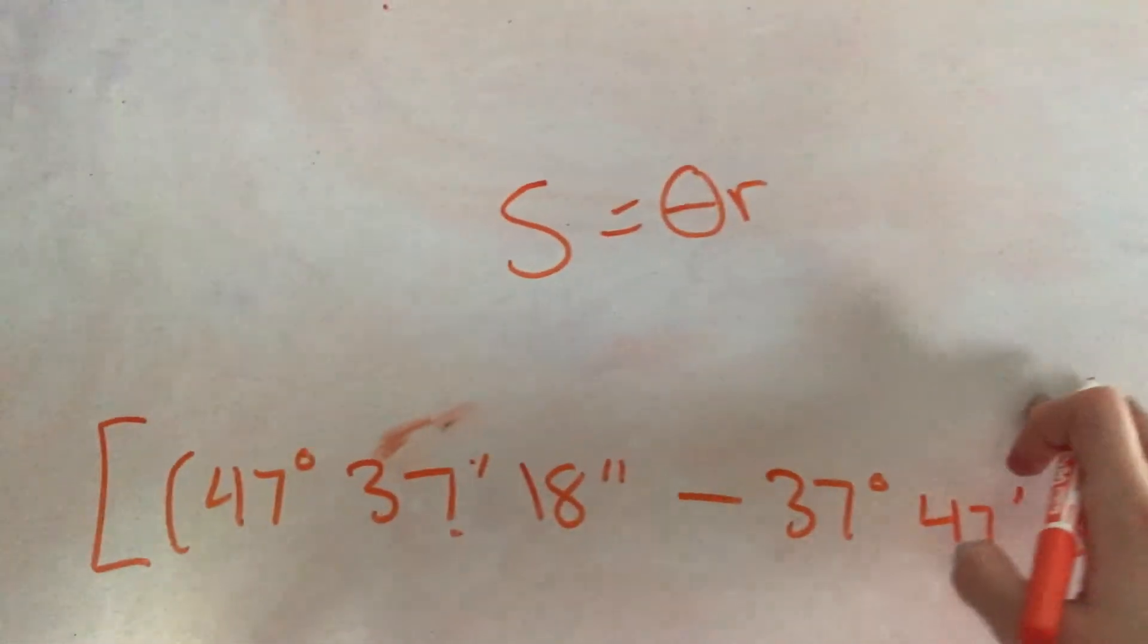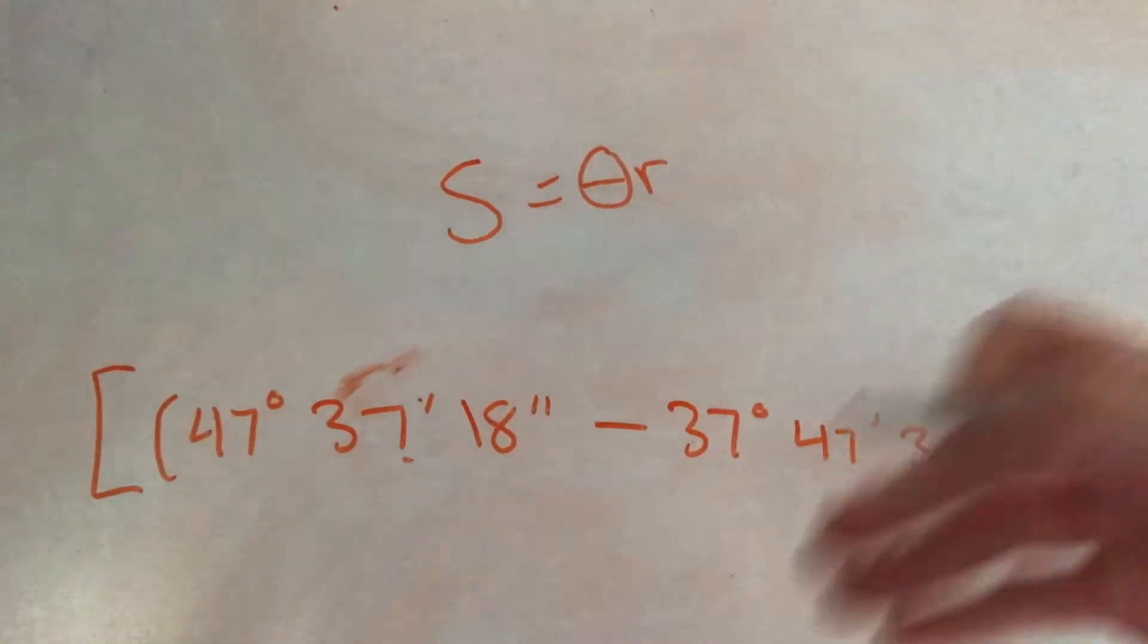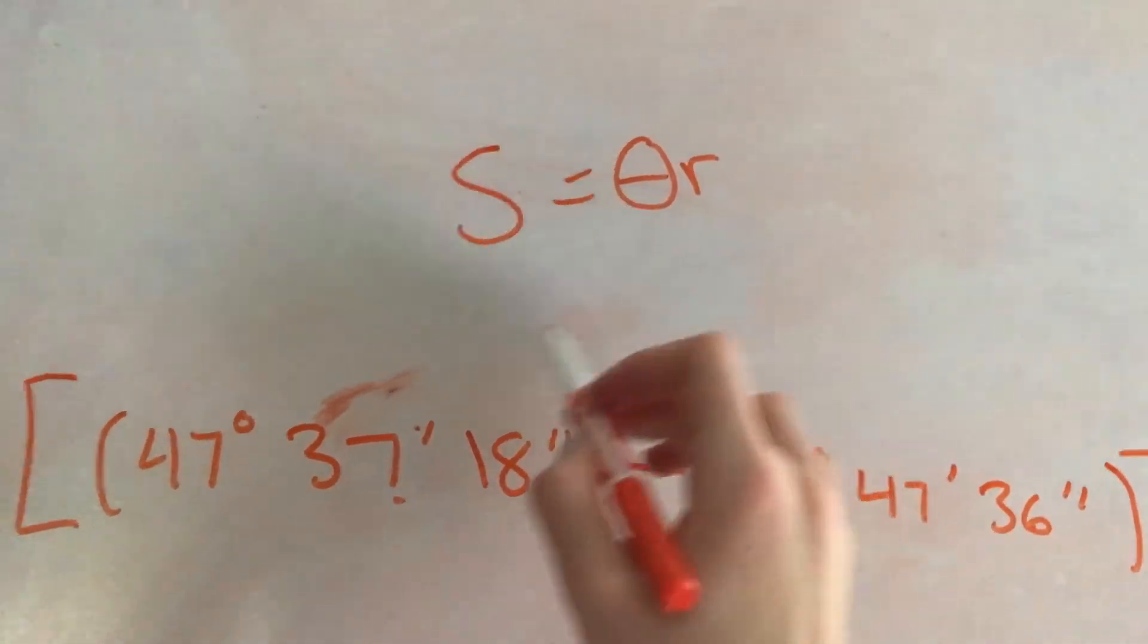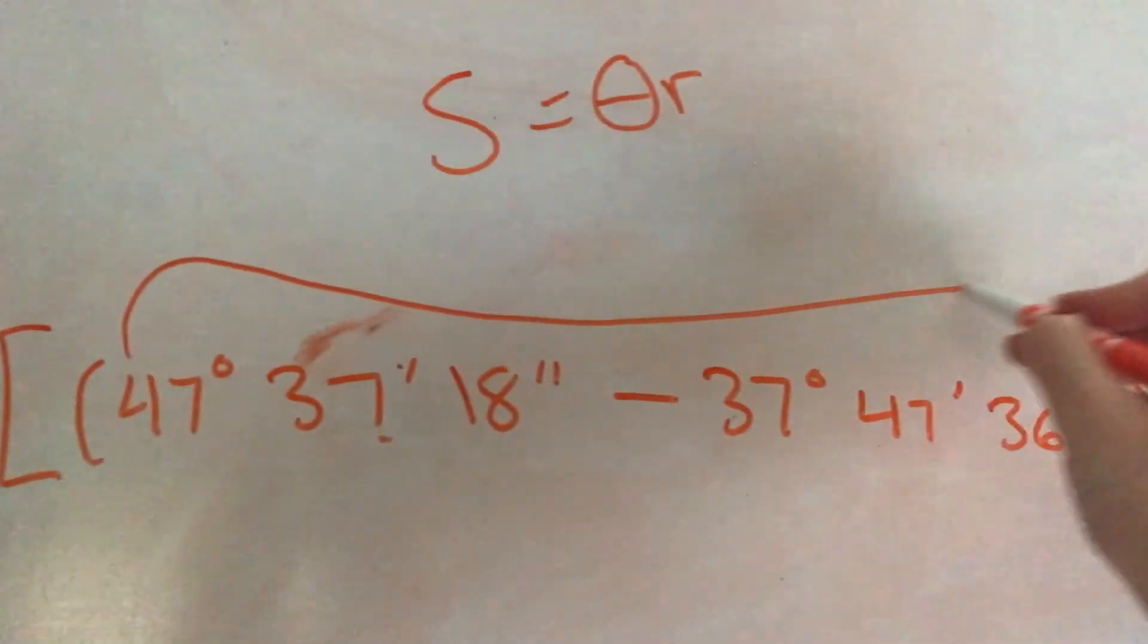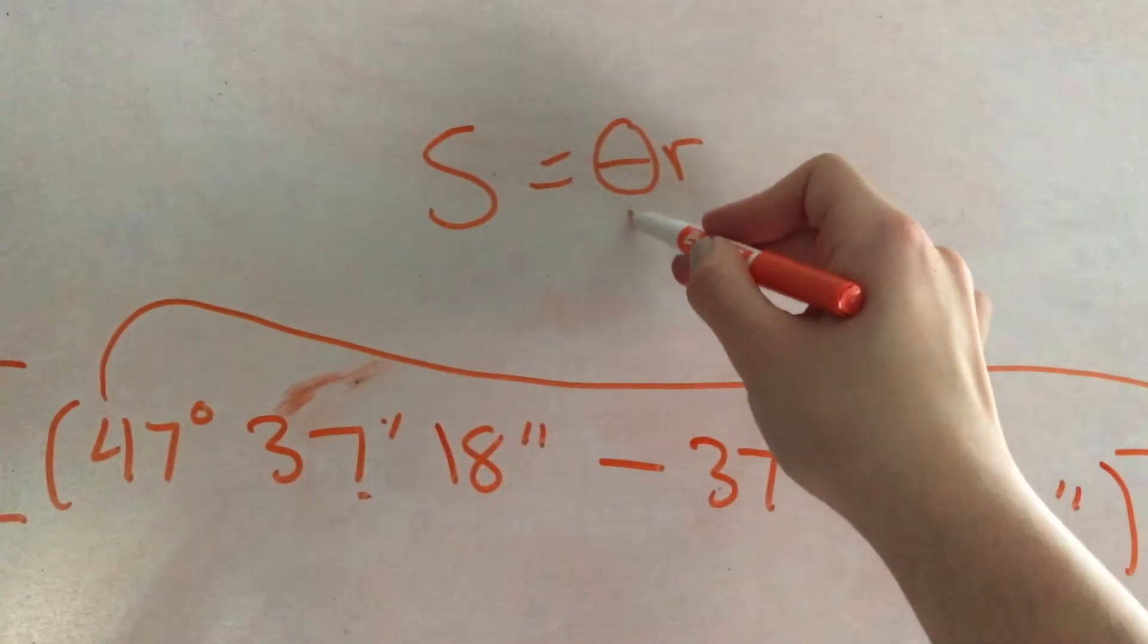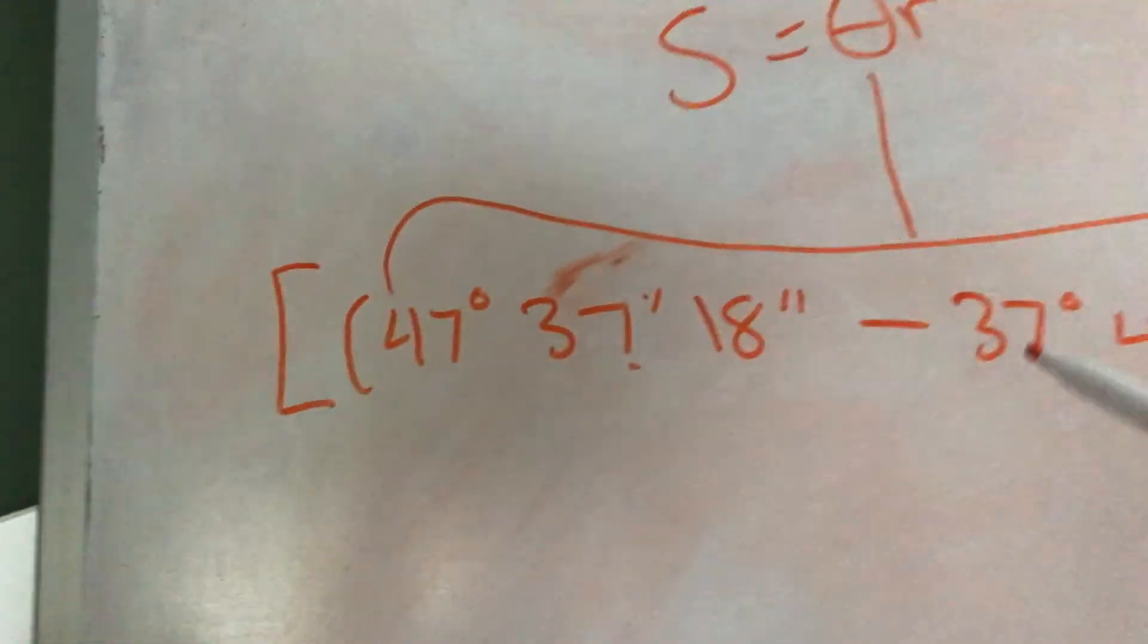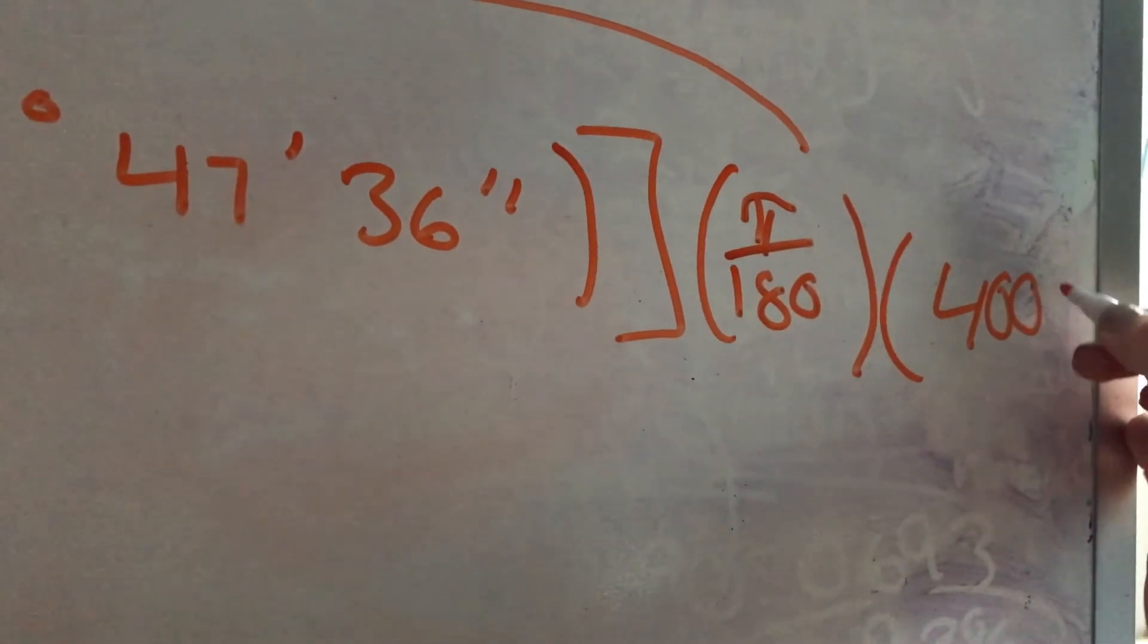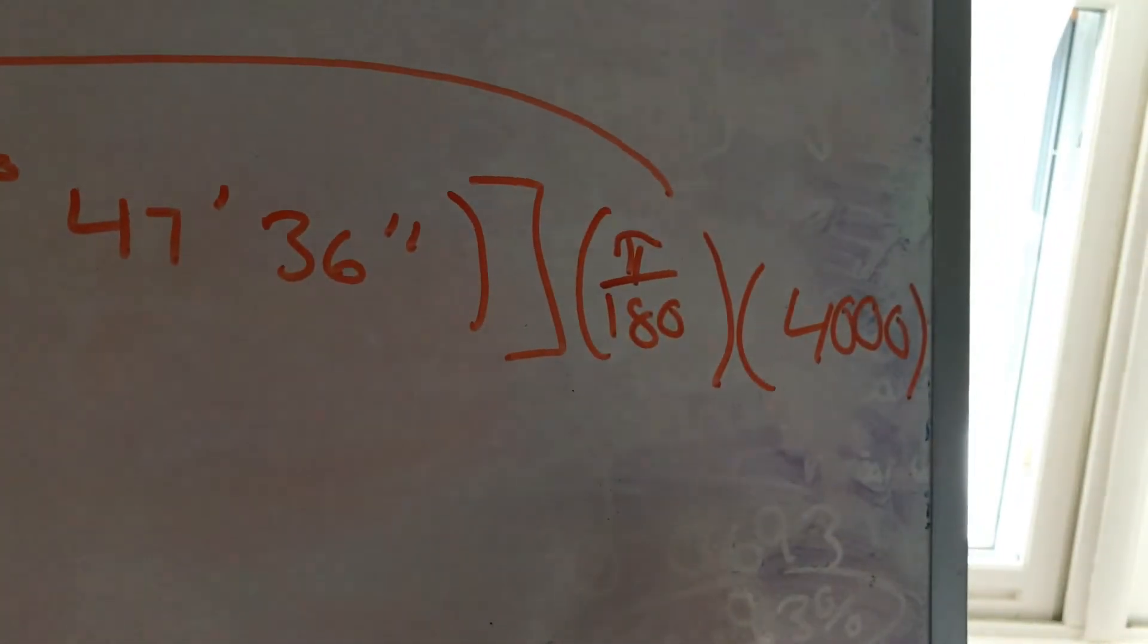Then we also need to multiply by 4,000 since that is our radius. This whole theta represents this big chunk over here. Now for our radius, we just write 4,000.